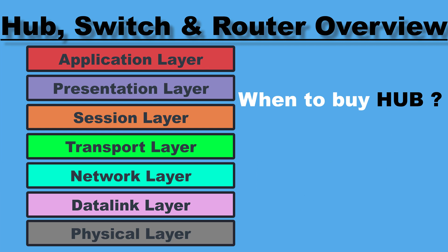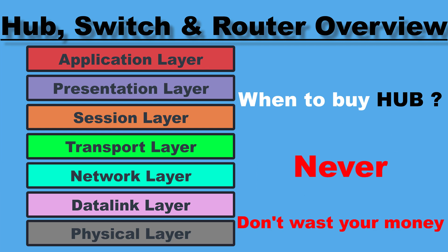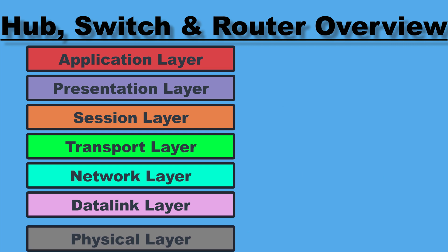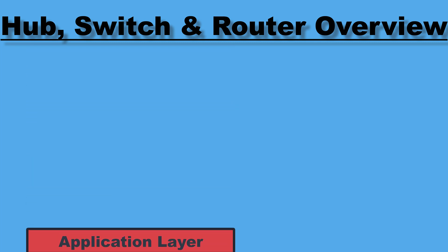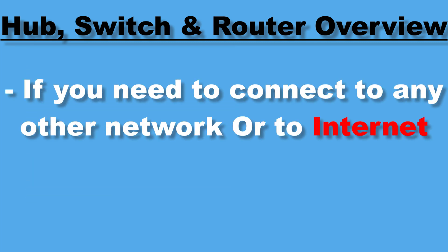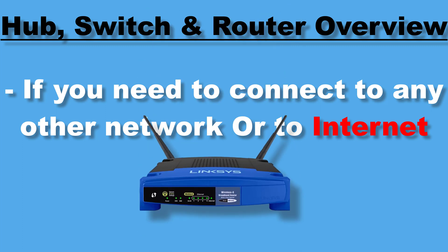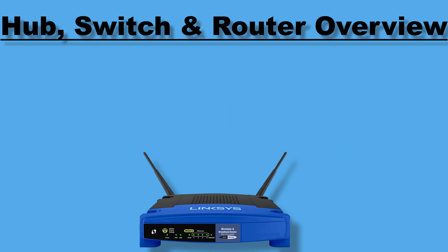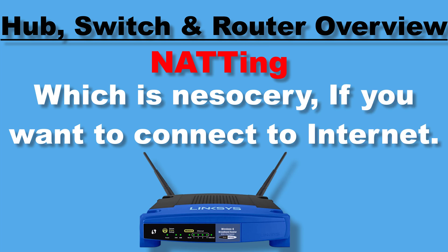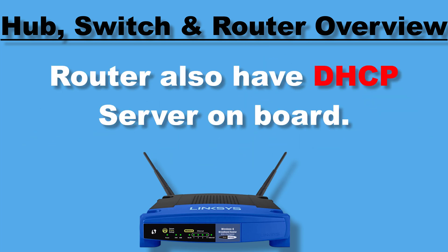When should you buy a hub? The answer is never — don't waste your money. You can get a switch for approximately the same price, so always buy a switch for your network. The one advantage of a hub is if you want to capture all network traffic. But if you need to connect to another network or to the internet, you need a router. The router's main purpose is connecting different networks to one another, and it also provides NAT and DHCP so you don't need to manually configure IP addresses for any host.